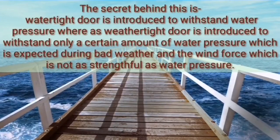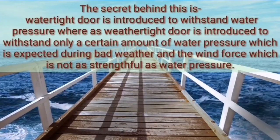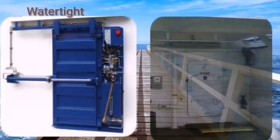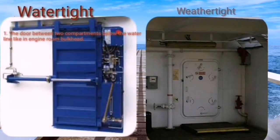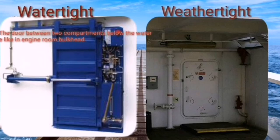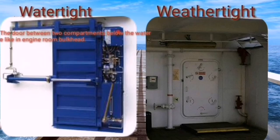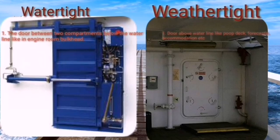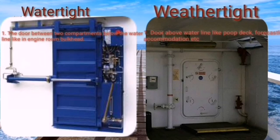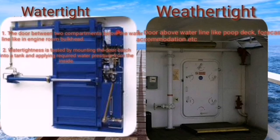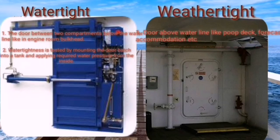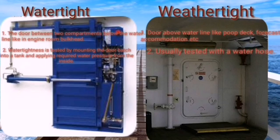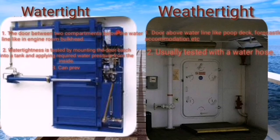Let us consider the differences in detail. Depending upon location, in the case of watertight doors, the door is between two compartments below the waterline, like in the engine room bulkhead. In the case of weathertight doors, the door is above the waterline, like on the forecastle deck, accommodation areas, etc.